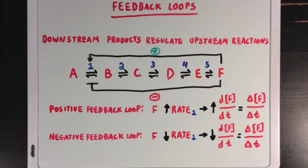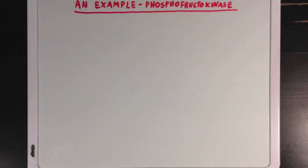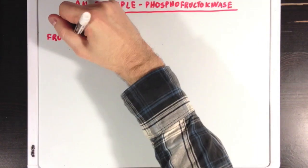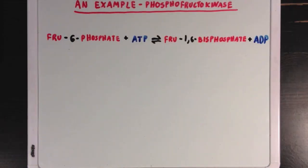So, let's look at an example of a feedback loop, just to really drive home the point, if you're still confused. Now, phosphofructokinase is an enzyme involved in glycolysis, and it catalyzes the conversion of fructose 6-phosphate and ATP to form fructose 1,6-bisphosphate and ADP. Now, remember that glycolysis is a metabolic process that cells use to generate ATP.